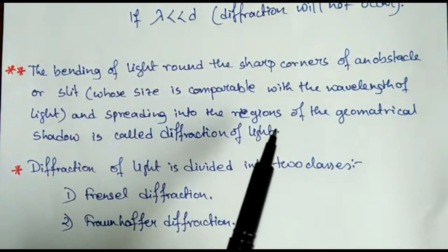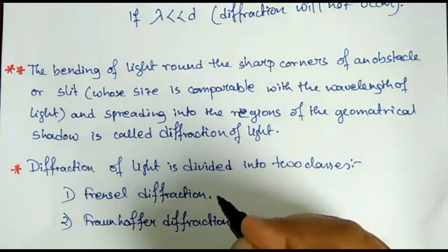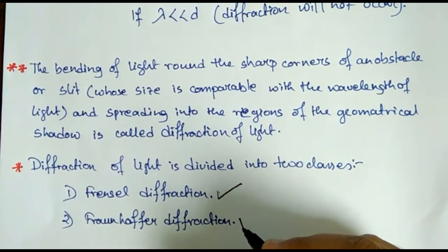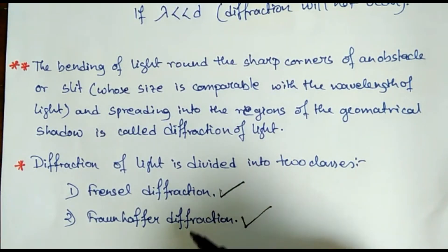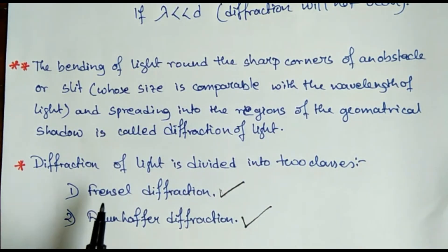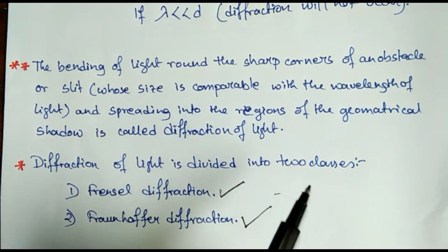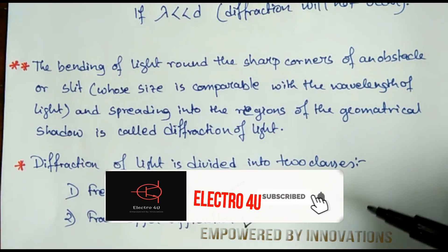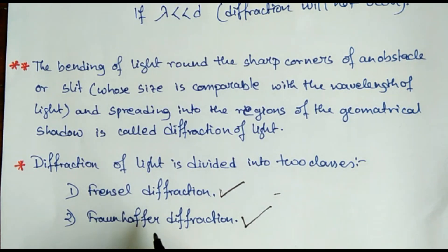Diffraction of light is divided into two classes: one is Fresnel diffraction and the second is Fraunhofer diffraction. These names come from scientists, and the division is based on the slit, the screen, and mainly how the light spreads through the slit. In the next class we will further discuss Fresnel and Fraunhofer diffraction and the various topics included in each. Thank you for watching.